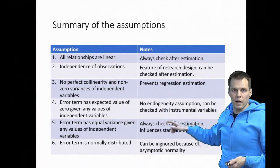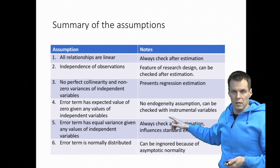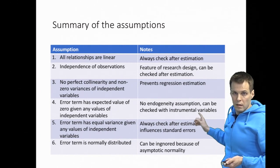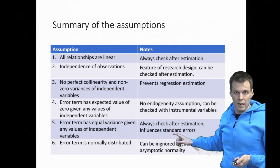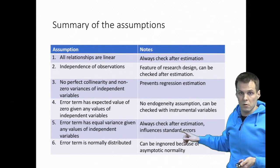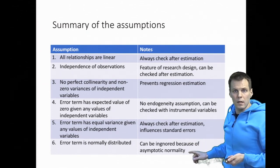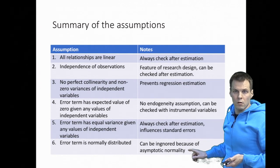Fourth, the error term has an expected value of zero given any values of independent variables — meaning all other causes of the dependent variable not included in the model must be uncorrelated with included causes. This is a strong assumption that can be tested with instrumental variables. Fifth, the error term has equal variance given any values of independent variables — no heteroscedasticity — which should be checked after estimation because it influences standard errors and is easy to fix. Sixth, the error term is normally distributed — I typically check this to identify outliers, but otherwise it is not an important practical assumption.